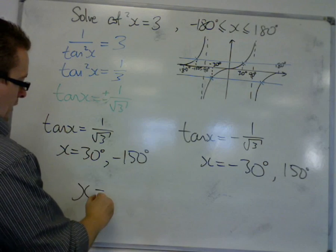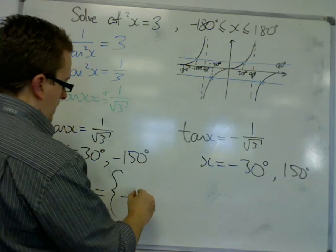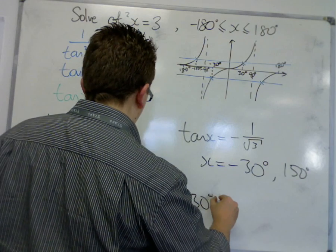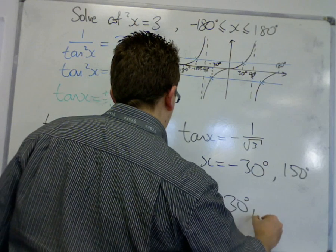So our four solutions are minus 150, minus 30, 30, and 150.